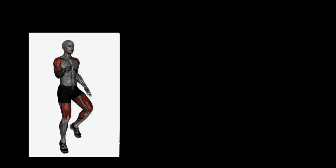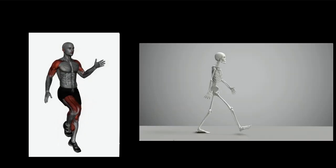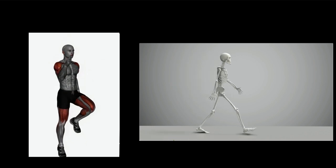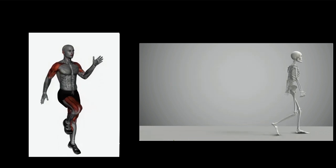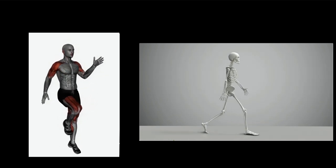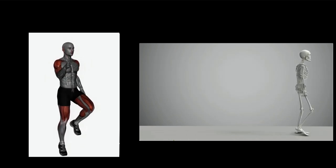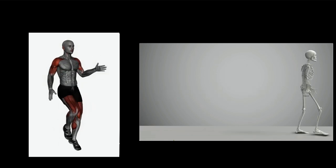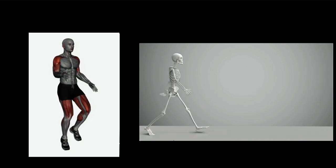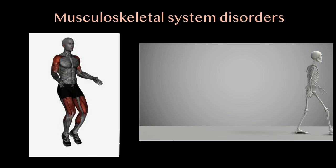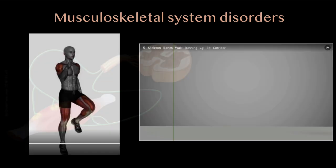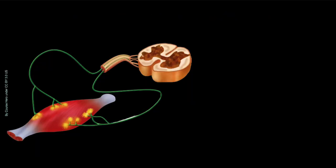The muscular system and the skeletal system are important for many different types of movement in our body. When any part of these systems is affected, it will affect our movements. This video is about different disorders in these two types of systems.